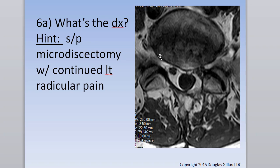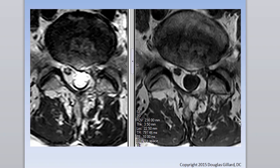There's the left exiting L5 nerve root, and the traversing S1 nerve root on the left is hidden in all this material — that's either scar tissue or a recurrent disc herniation. Sometimes it's hard to tell, so what you do is order a gadolinium-based MRI. This is called epidural fibrosis or perineural fibrosis, status post microdissectomy.